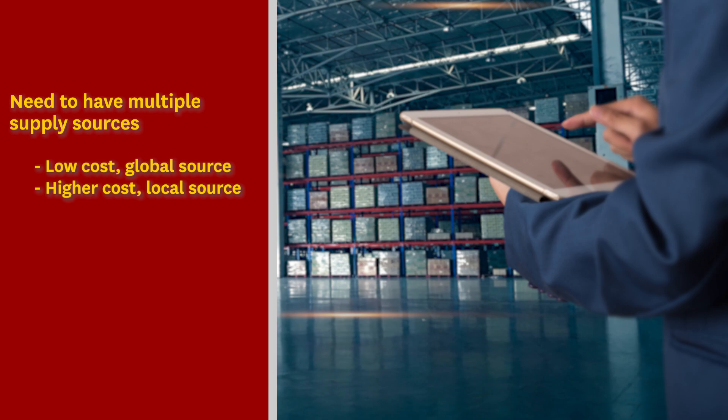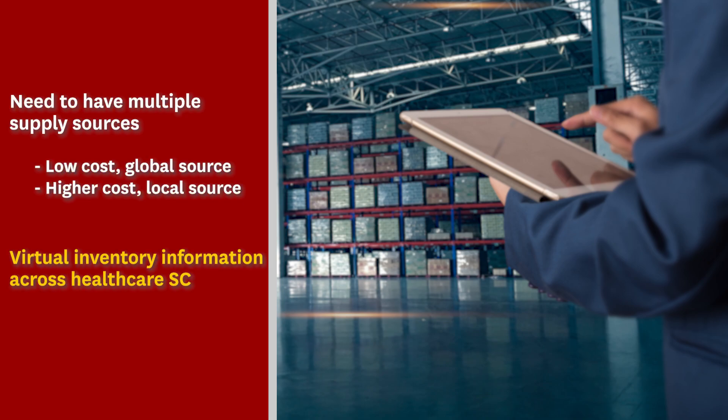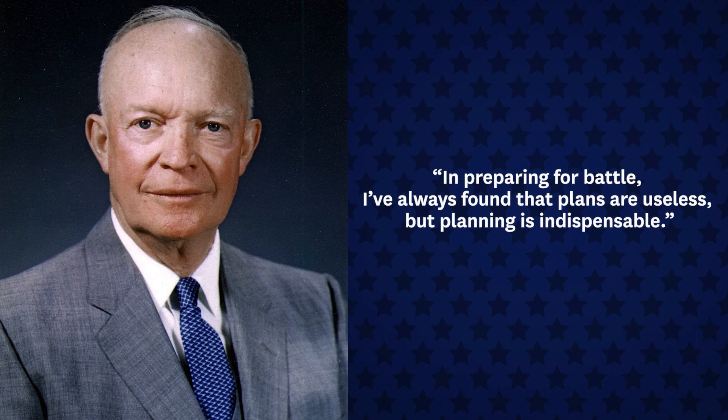We've often heard in the past few months about how we are waging a war with the virus. Well, to fight wars, we keep defense forces, equipment, and inventories of weapons ready to fight even if they are not used most of the time. We have to think the same way about pandemics. Finally, it is important to plan ahead for major supply chain disruptions even if there's considerable uncertainty about the source and duration of disruptions. As Eisenhower said, in preparing for battle, I have always found that plans are useless, but planning is indispensable. Thank you.